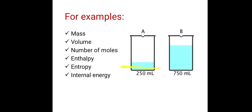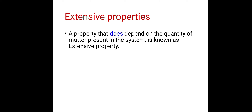Suppose initially in this beaker 250 ml of water is there. Now we have added 500 ml more of water into it, so it becomes 750 ml. There is an increase in volume, an increase in mass, and the number of moles is also increased. Initially volume was 250 ml, we added 500 ml of water more, then the volume became 750 ml — those two quantities get added. So volume is an extensive property; it depends upon what matter is present in that system.